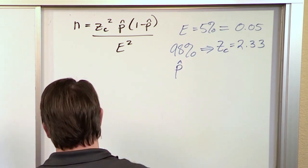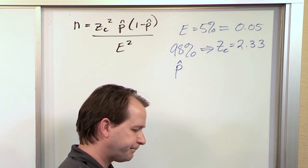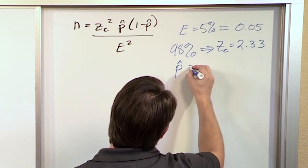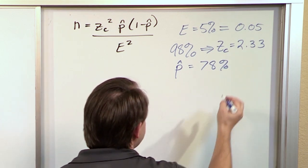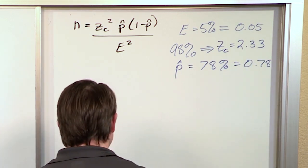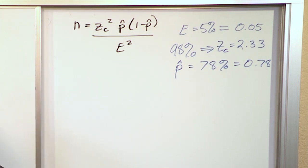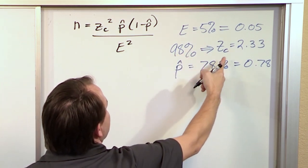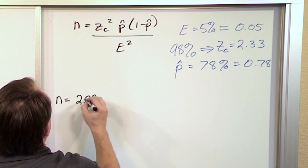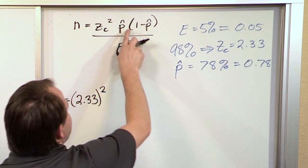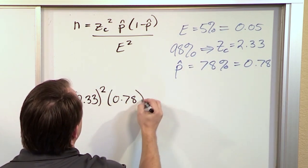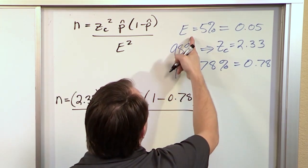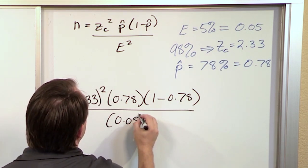p̂, it says in the problem, you read estimates that around 78% do get a student loan. So this is an estimate that around 78% get a student loan, which is 0.78. Make sure you use the decimal version in your problem. The sample size you need is z_c² (2.33²) times p̂(0.78) times (1-p̂)(1-0.78), and on the bottom is the margin of error 0.05².